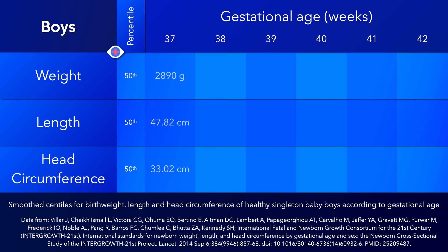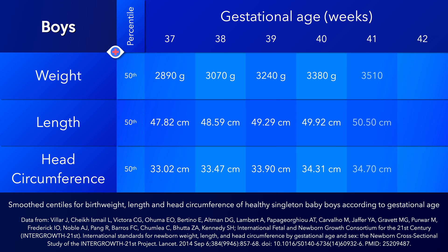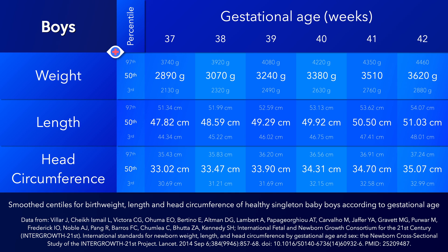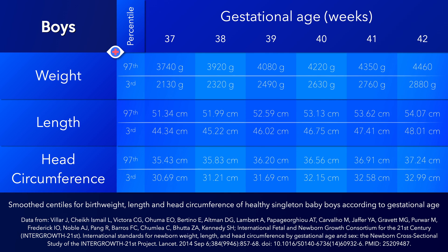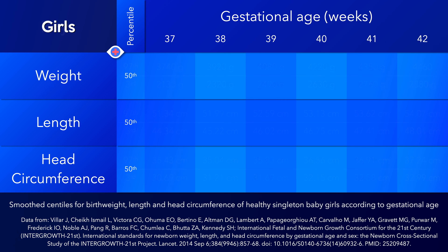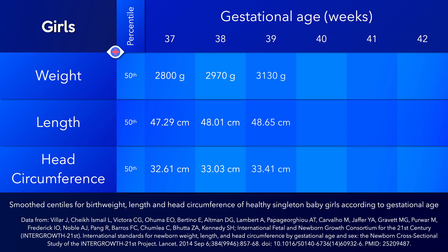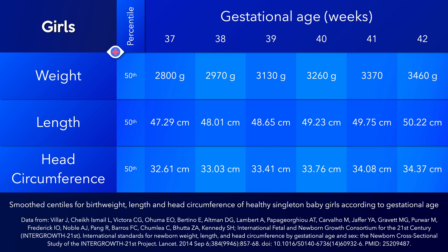Here is a sample of the smooth centiles for birth weight, length, and head circumference of healthy singleton newborns according to gestational age, shown separately for female and male babies.